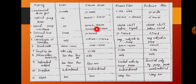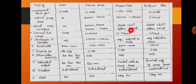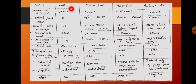For Raman fiber we cannot specify fixed pump wavelengths because the amplification occurs due to the scattering phenomenon. It purely depends on the Stokes shift, and the Stokes shift should be below the applied signal wavelength. In the case of Brillouin fiber also, the Stokes shift should be below the signal level.